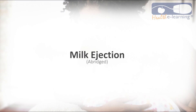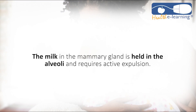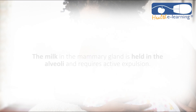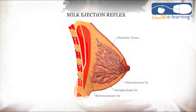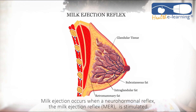Milk ejection reflex. The milk in the mammary gland is held in the alveolides and requires active expulsion. Milk ejection occurs when a neurohormonal reflex, the milk ejection reflex, is stimulated.